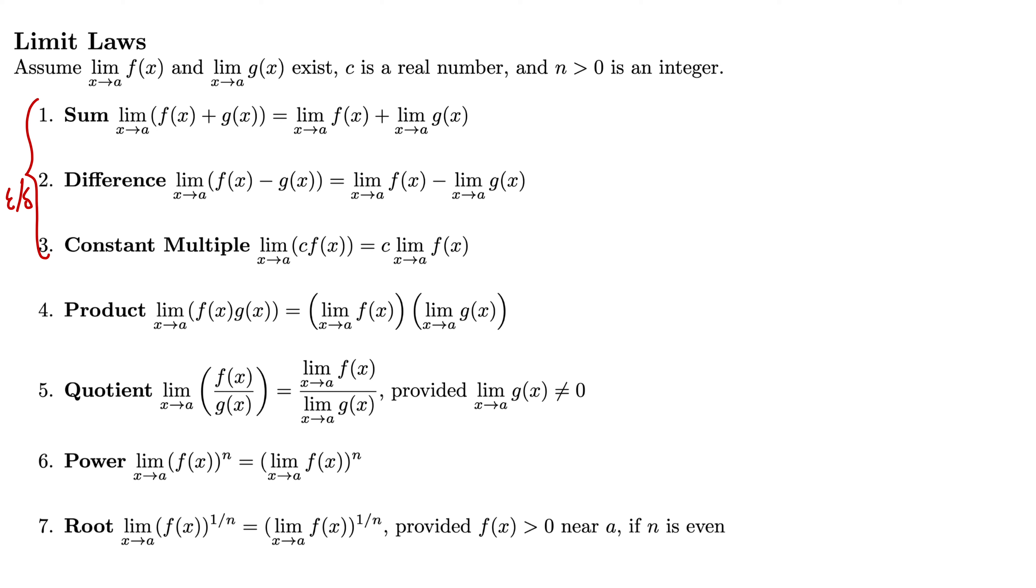4 and 5 are the product and quotient limit laws. Number 4 says the limit as x goes to a of the product of f(x) times g(x) is simply the product of the limits. So limit as x goes to a of f(x) times the limit as x goes to a of g(x). A really wonderful property to have, and that's what makes the limits so wonderful and calculus works so well, is that we have this multiplicative property, and then with number 5 we have a property for division with the quotient law. The limit as x goes to a of f(x) divided by g(x) is indeed the quotient of the limits, with the caveat that the limit as x goes to a of g(x) cannot be 0.